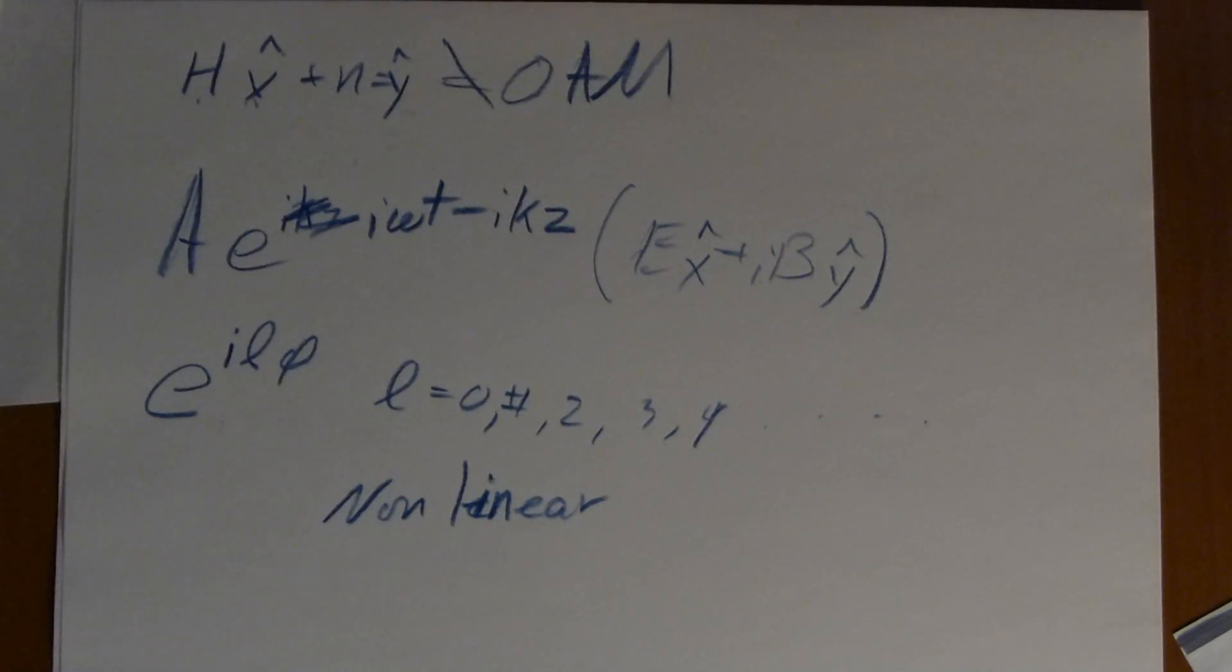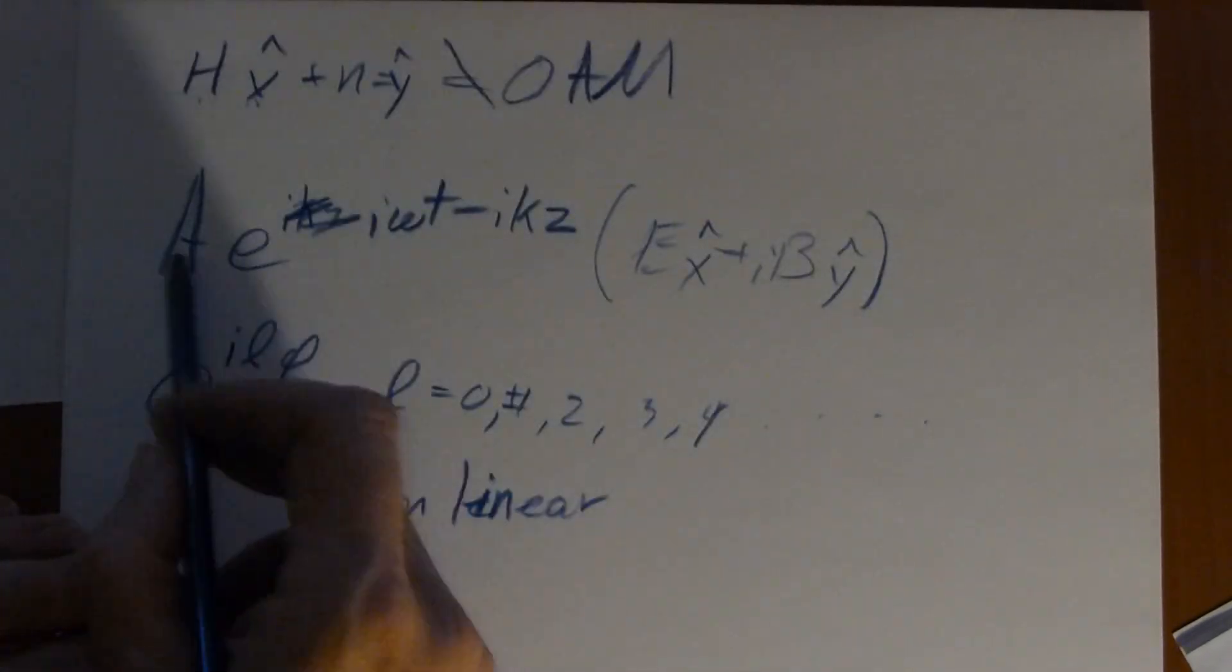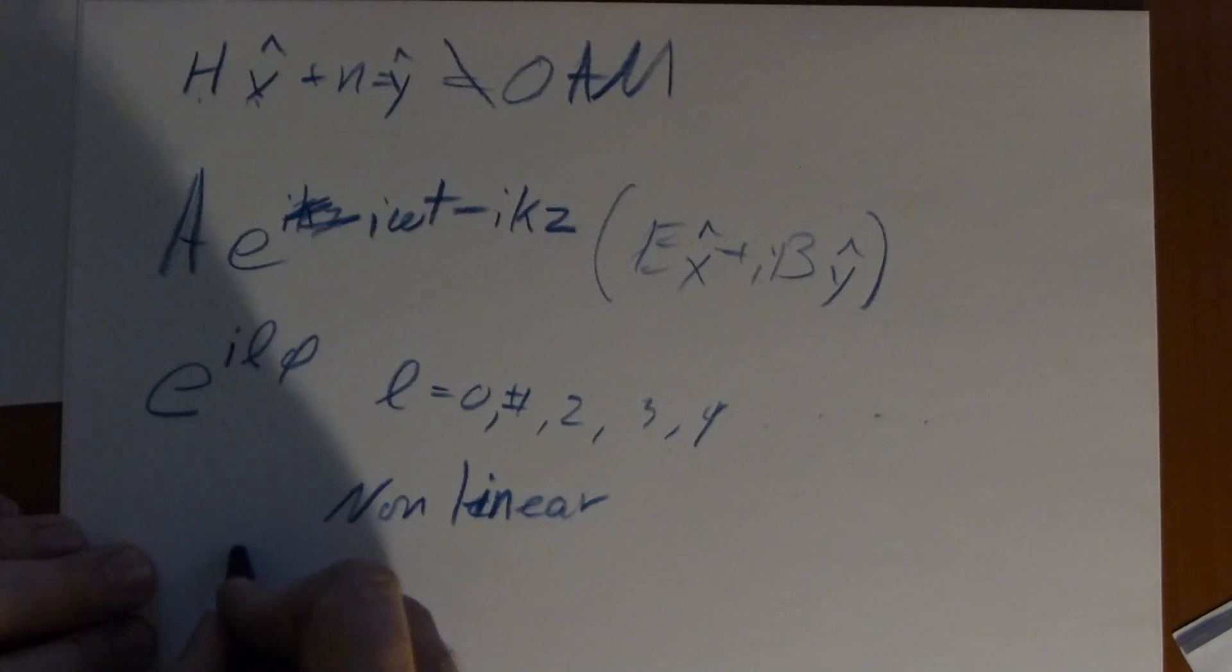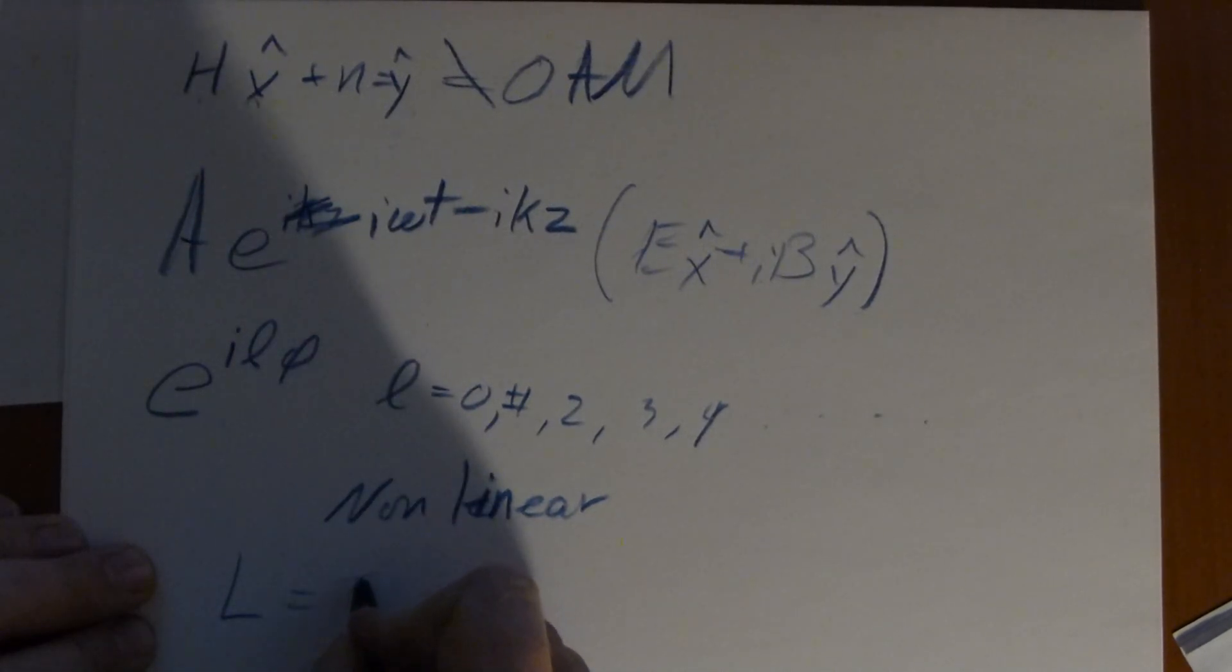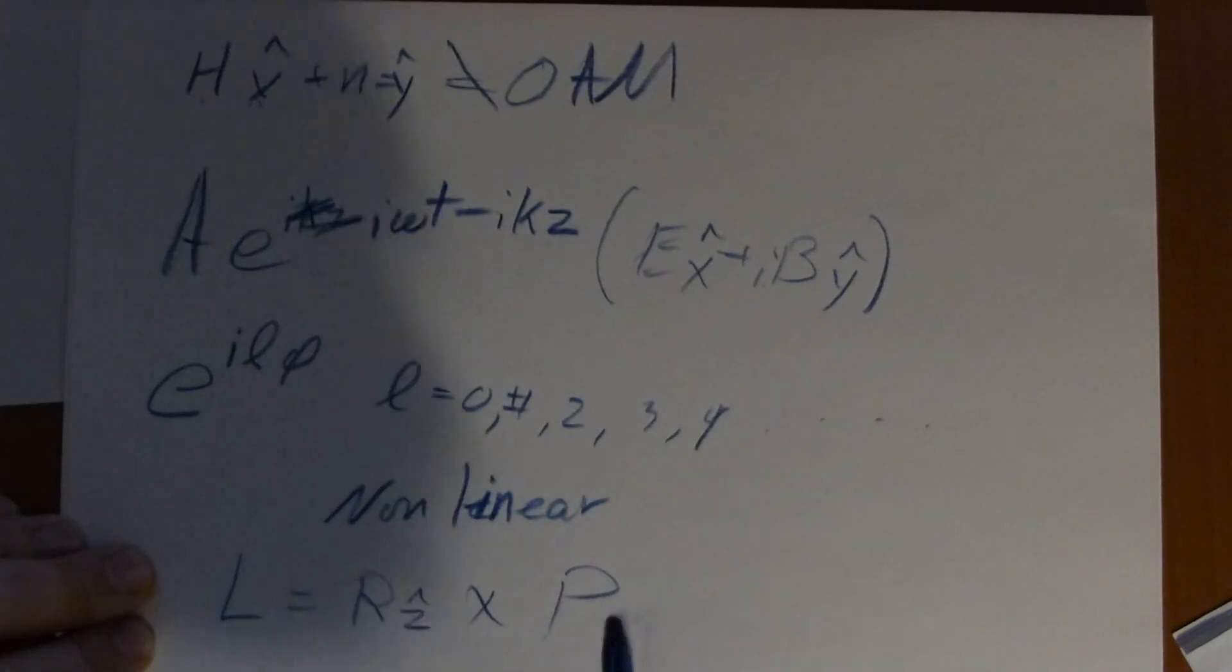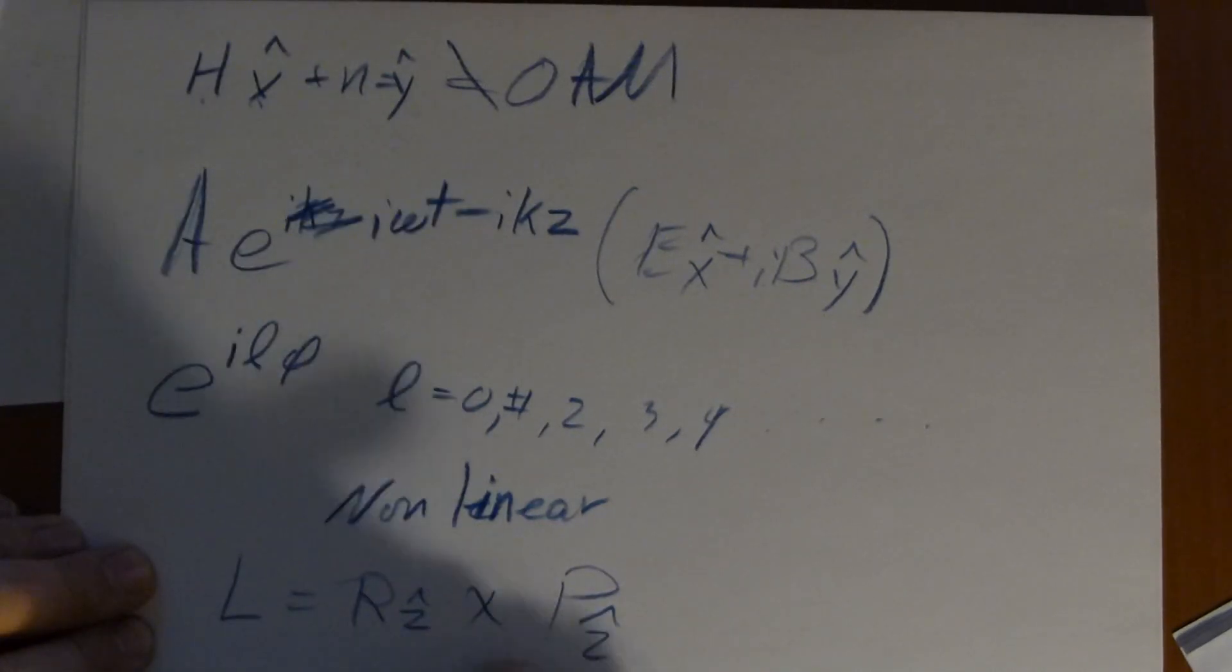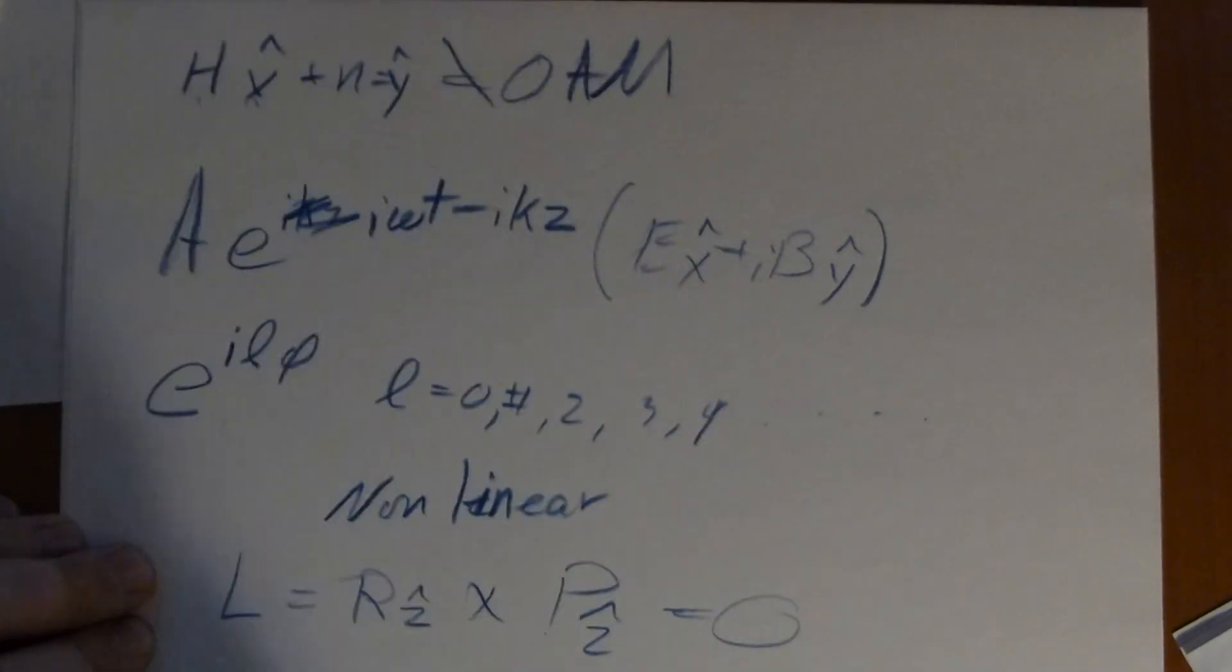Or likewise, we could demonstrate this likewise by adding a number of these together and looking at L equals R, which is in the z-direction, cross with the pointing vector, also in the z-direction. Long story short, that's gonna be zero. Every time.